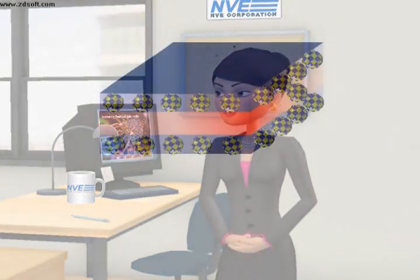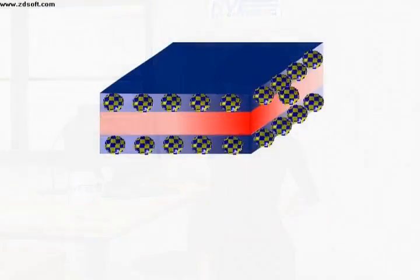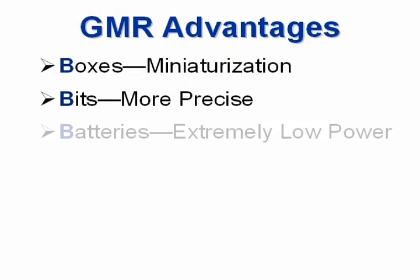We can summarize these advantages with the three Bs: boxes, bits, and batteries.